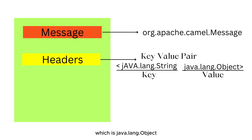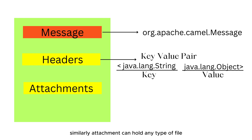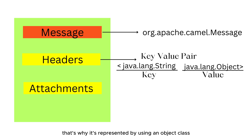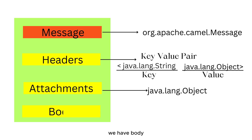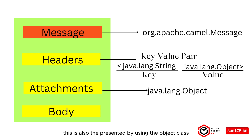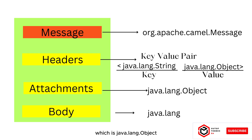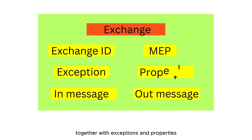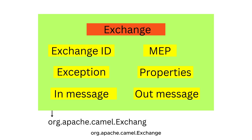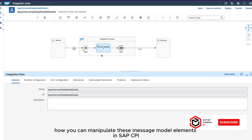The value in a header can be any object, which is java.lang.Object. Similarly, an attachment can hold any type of file — PDF, CSV, or any object — and is therefore represented by java.lang.Object. The body, which contains the payload of your message, is also represented by java.lang.Object. Finally, exchange, which holds both inbound and outbound messages together with exceptions and properties, is represented by the interface org.apache.camel.Exchange.